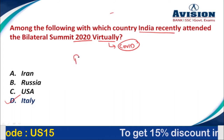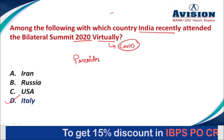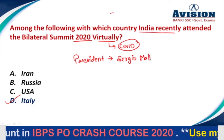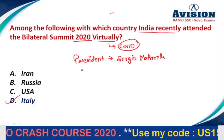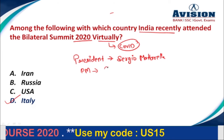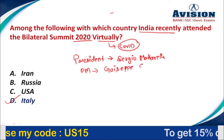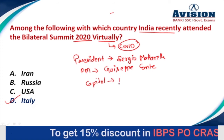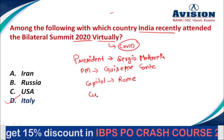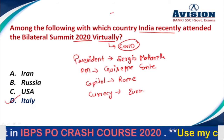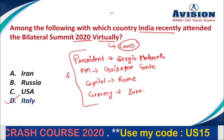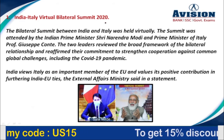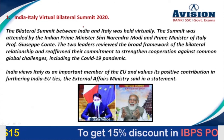The correct option is option D, that is Italy. The president of Italy is Sergio Mattarella, and the prime minister is Giuseppe Conte. The capital of Italy is Rome and the currency is Euro. These are additional details to keep in mind.